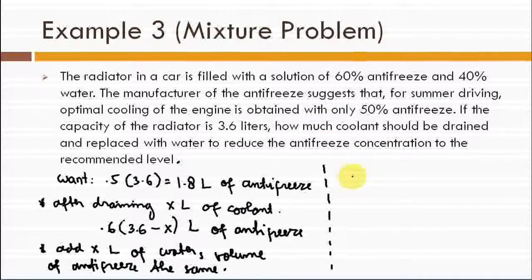We set up the equation: 0.6 times 3.6 minus x equals 1.8. Dividing both sides by 0.6, we have 3.6 minus x equals 3.